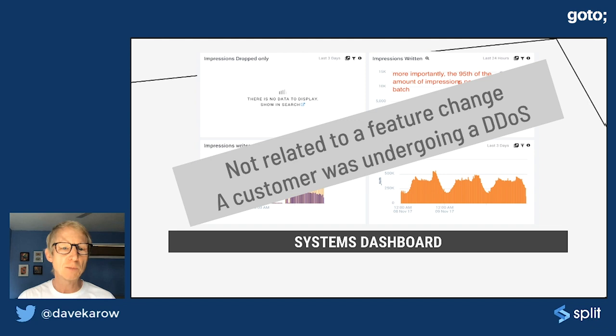So it turns out that that dashboard I showed you, that wasn't a feature change. It was a customer of ours that was undergoing a distributed denial service attack. And so we wasted a ton of time trying to figure out what was going on, what was wrong with our system or our code. Turns out nothing was. It would have been nice to have a little clearer information about what was going on.